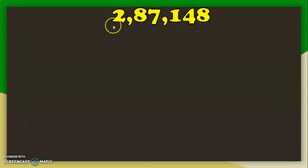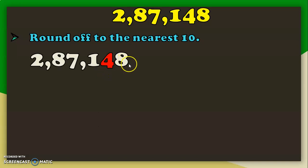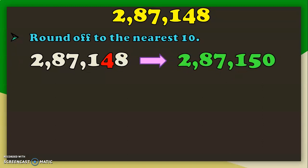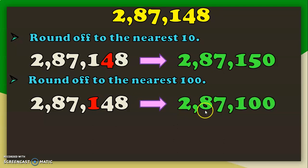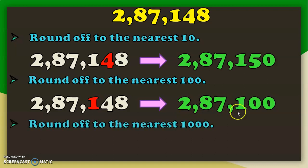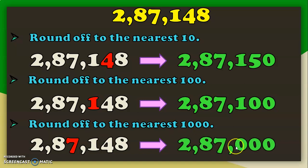For larger numbers, we use the digit method instead of the number line. To round off to the nearest 10: look at the tens place — you have 4, and the digit after it is 8, which is bigger than 5, so round up to get 2,80,150. To round off to the nearest 100: look at the hundreds place — you have 1, and the digit after it is 4, which is less than 5, so round down to get 2,87,100. To round off to the nearest 1000: look at the thousands place — you have 7, and the digit after it is 1, which is less than 5, so round down to get 2,87,000.